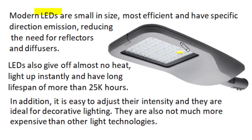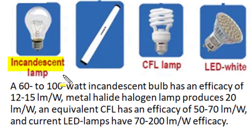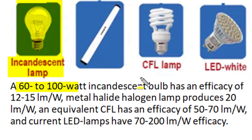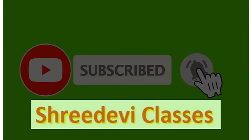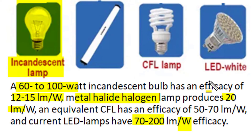To summarize: the incandescent tungsten filament lamp served mankind for more than 100 years due to its simple construction and low initial cost, but has lumen efficiency of only 12–15 lumens per watt. Metal halide halogen lamps improved this slightly to about 20 lumens per watt. Gas discharge lamps — high pressure mercury vapor and sodium vapor lamps — achieved 60–70 lumens per watt for outdoor applications. Fluorescent tube lights and compact fluorescent lamps offered comparable efficiency for indoor applications. Recently, LEDs have replaced all other lamps with higher lumen efficiency of 70–200 lumens per watt and better functionality.